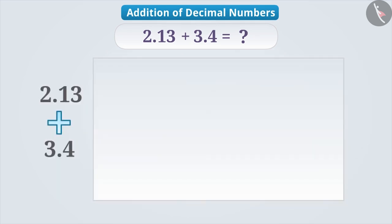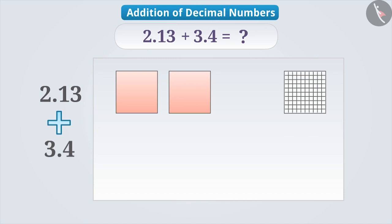In order to learn the addition, let's take a square and consider it as a whole or a unit. Since there are two wholes in 2.13, we will consider two such squares. And to represent 13 hundredths, we will take a whole which is divided into 100 equal parts and shade 13 parts of it.